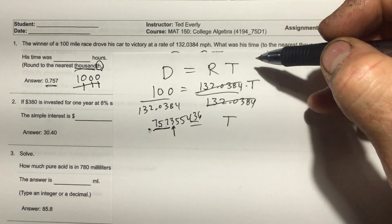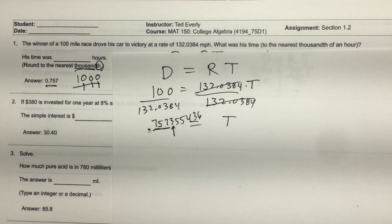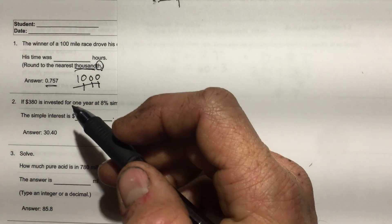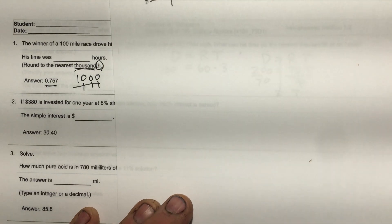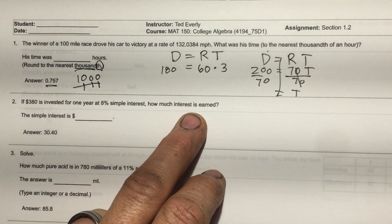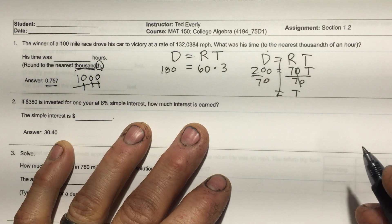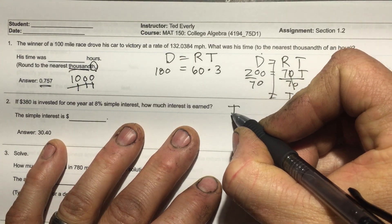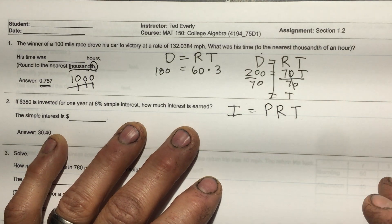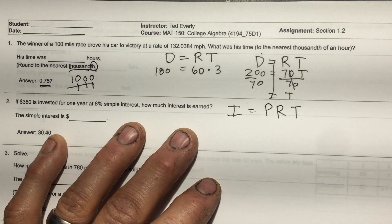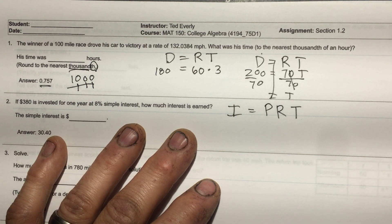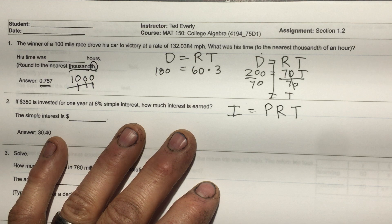Distance equals rate times time is a very useful equation we use when traveling. Now the next problem: $380 is invested for one year at 8% simple interest — how much interest is earned? The formula is interest equals principal times rate times time. We use this every day because we borrow money or earn interest on investments.